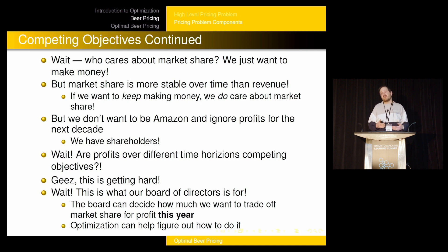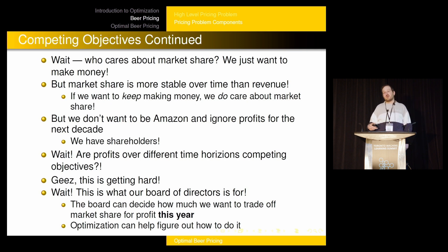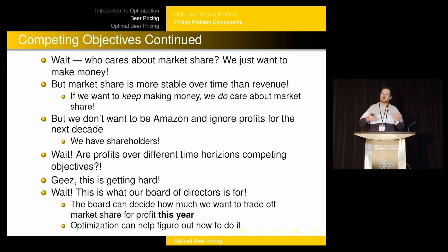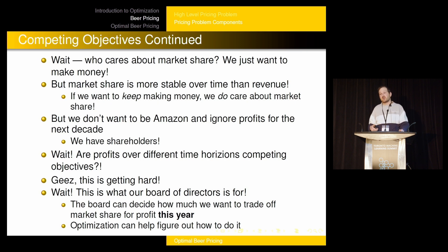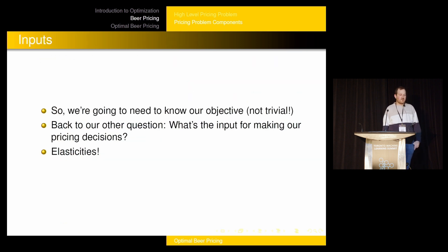How do we solve this? Actually, we don't ask optimization how to solve this — this is what our board of directors is for. They can make the decision about how much we want to trade off market share for profit this year. They might have questions about how much market share we need to sacrifice to make a certain amount of profit, and they might ask the optimization layer: if we're doing things optimally, how can we balance these objectives? Optimization can help figure out how to do this, but it's not going to tell you what your objective is — you need to figure that out for yourself.